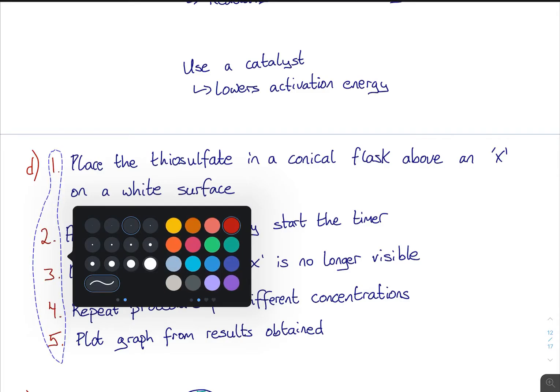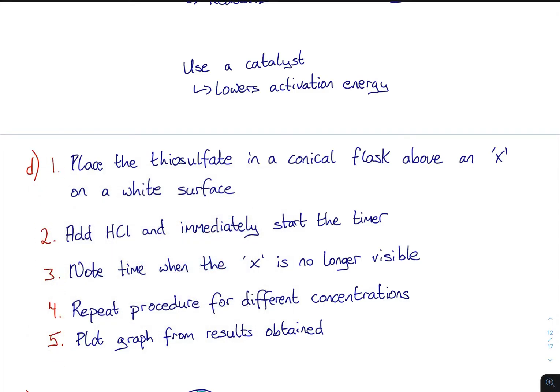Part D - this is actually the experiment. Sodium thiosulfate reacting with HCl to get sulfur dioxide and sulfur precipitate. Describe how we would measure the reaction time. First, place one of the solutions into a conical flask on an X - a cross on a white surface. Add in the HCl and immediately start the timer. Note the time when the X is no longer visible.